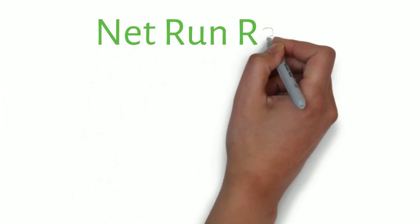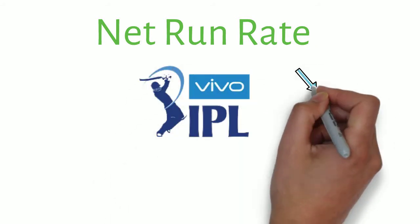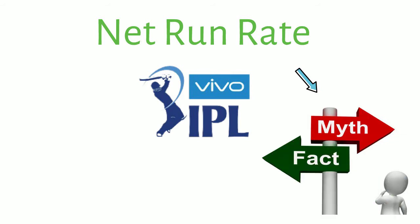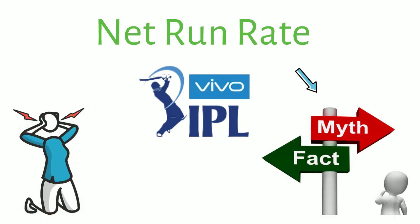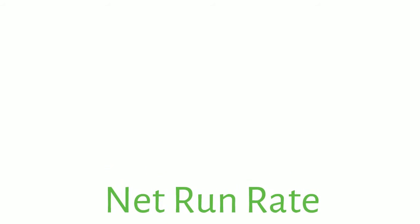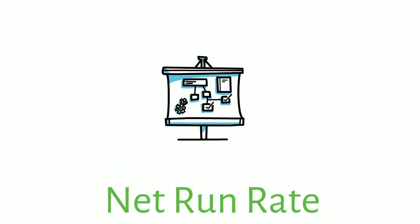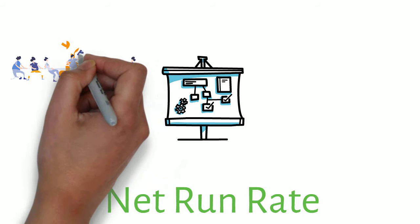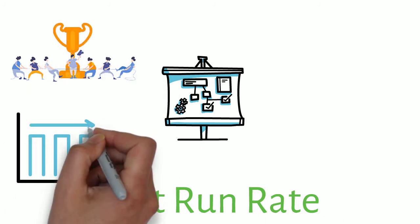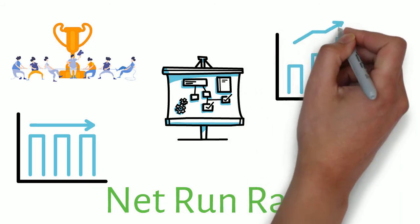Net run rate is quite an old concept but still an important factor for big leagues like IPL. There are many myths surrounding this easy yet confusing concept, which I will clear here. Net run rate is the basic factor for pointing out the actual winner if two teams have the same wins and almost identical points. You can understand it by following the current IPL points table — Mumbai, Chennai, and Delhi have the same wins but are not in the same position. The major factor that distinguishes their positions is how they played those games and how fast.